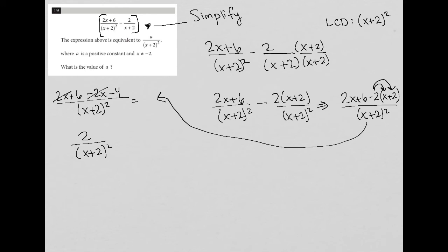And typically, by doing so, I find the right answer. So the question actually says the expression above is equivalent to a over x plus 2 squared. Well, that's interesting, because that would mean that if it's equivalent to a over x plus 2 squared, that would mean that a must equal 2.